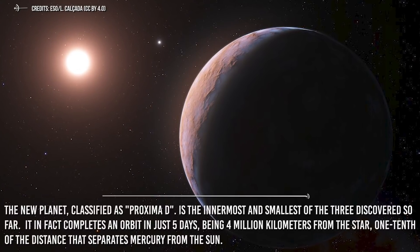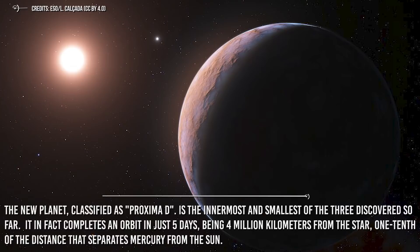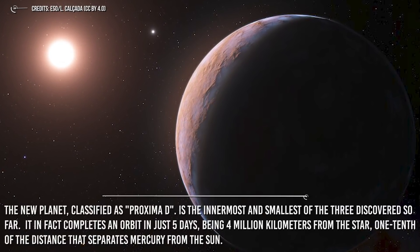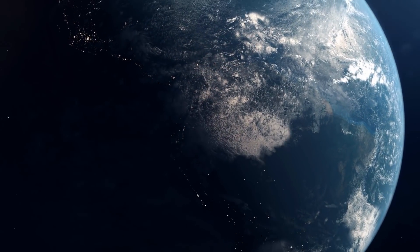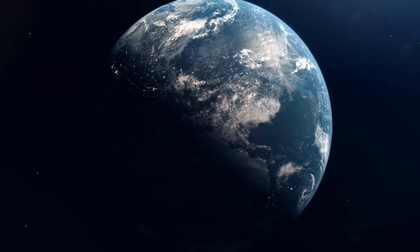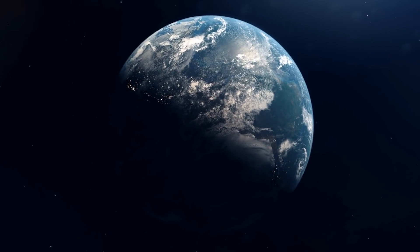It in fact completes an orbit in just five days, being 4 million kilometers from the star, one-tenth of the distance that separates Mercury from the Sun. Its mass instead is equal to a quarter of the Earth's, which also makes it one of the lightest exoplanets ever discovered.